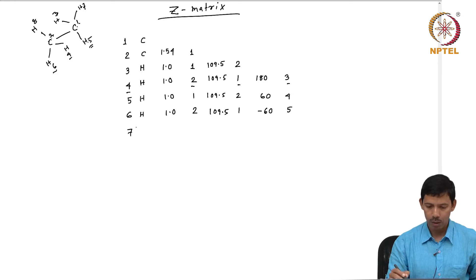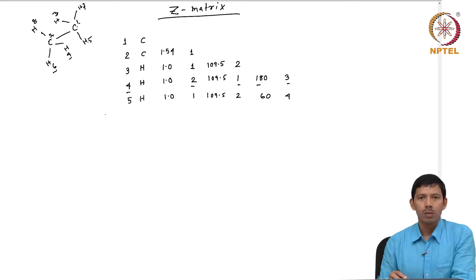Number 7 is hydrogen forming a bond with 1 and that value is 1.0 and the angle it makes with 7, 1, 2 is again 109.5.